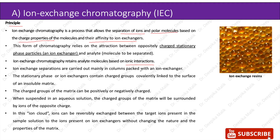Ion exchange separations are carried out mainly in columns packed with an ion exchanger. The stationary phase or ion exchangers contain charged groups covalently linked to the surface of an insoluble matrix. The charged groups of the matrix can be positively or negatively charged. When suspended in an aqueous solution, the charged groups of the matrix will be surrounded by ions of the opposite charge. In this ion cloud, ions can be reversibly exchanged between the target ions present in the sample solution and the ions present on ion exchangers without changing the nature and properties of the matrix.